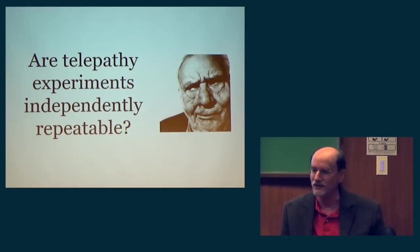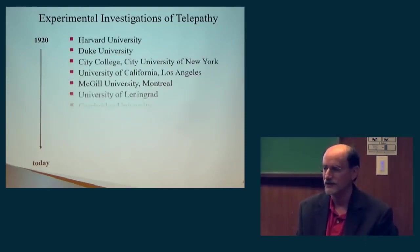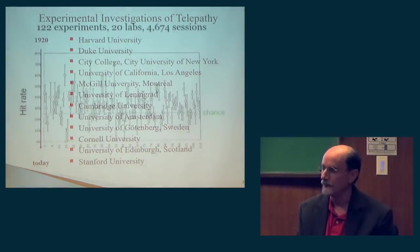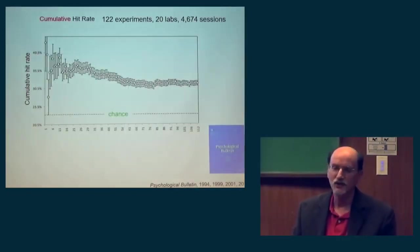These experiments have been investigated since about the 1920s up to the present at lots of different universities around the world. When you look specifically at the Gonsfeld experiment, it's 122 experiments by 20 labs, and over 4,600 sessions. The hit rate you see is 25%, and each one of these little dots with error bars is showing the result of each one of the 122 experiments. At a glance, your eye can tell you that many of them worked, some didn't work so good. So this is why meta-analysis has become popular.